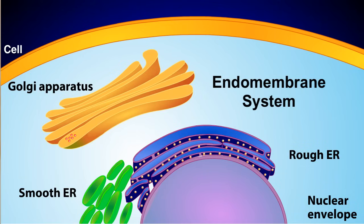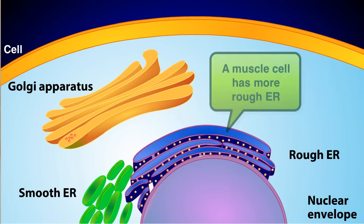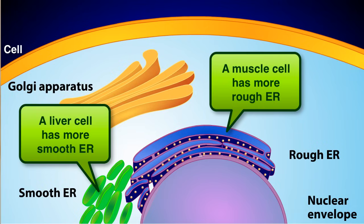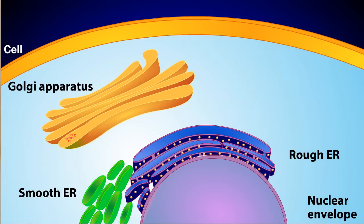A muscle cell usually has more rough ER because of its need for protein, while a liver cell usually contains more smooth ER because of its role in detoxification. Regardless of these modifications, the movement of materials within the endomembrane system is basically the same for all eukaryotic cells.